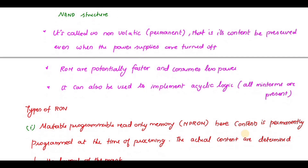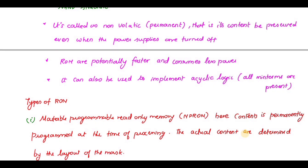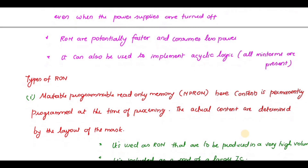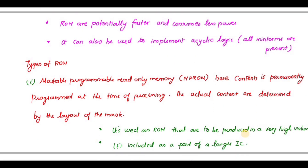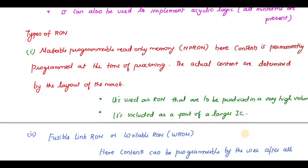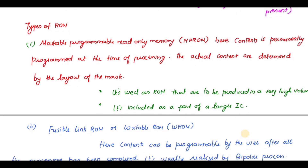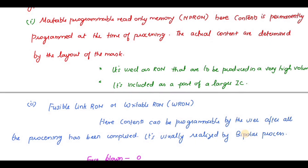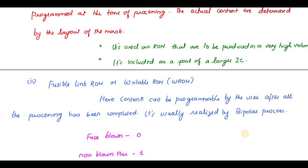The types of ROMs are: first, Maskable Programmable Read-Only Memory (MPROM), where the content is permanently programmed at the time of fabrication itself and the actual contents are determined by the layout of the mask. This type is used as a ROM whenever the production volume is high and it is included as part of a larger IC.